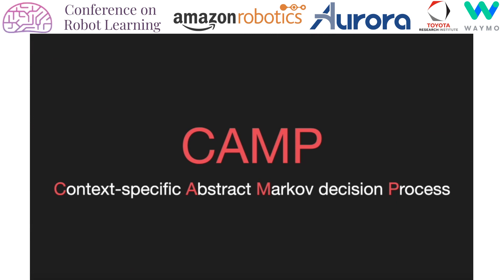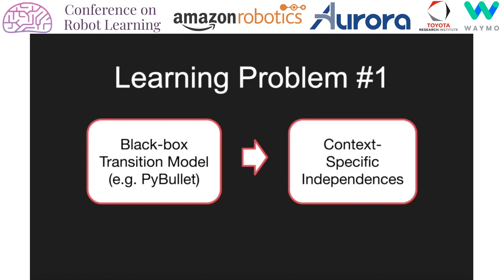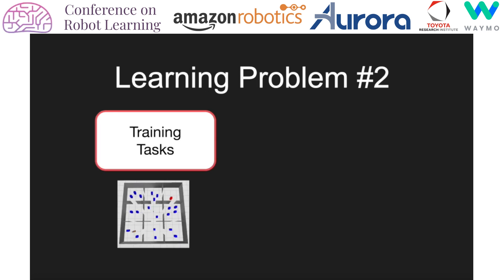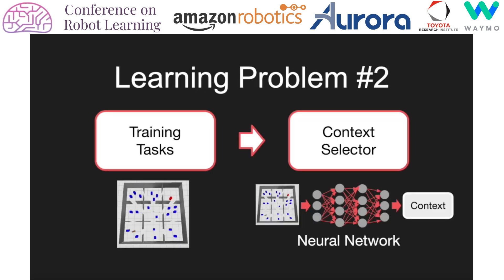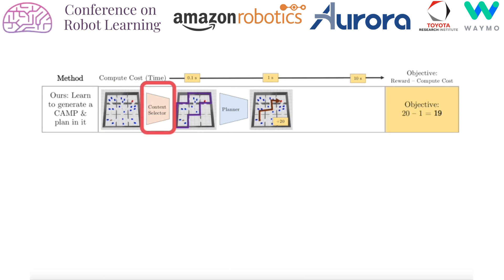We address two learning problems. One: given a black-box transition model like a physics simulator, learn the context-specific independences. Two: given a set of training tasks, learn a context selector that predicts a good constraint to impose on a given task based on features of the task, like a top-down image of the scene in NAMO. Given a new test task, we query the context selector for a constraint to impose and determine which variables to ignore from the learned CSIs.